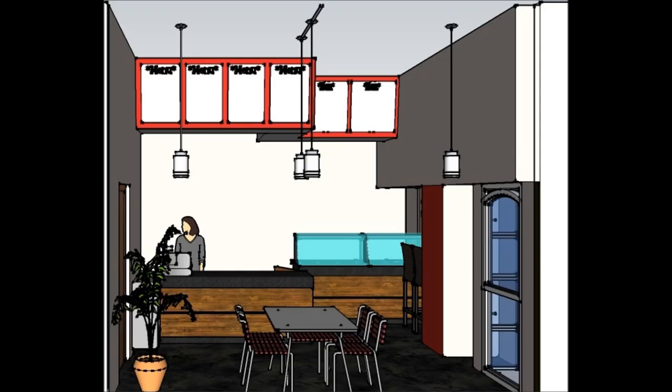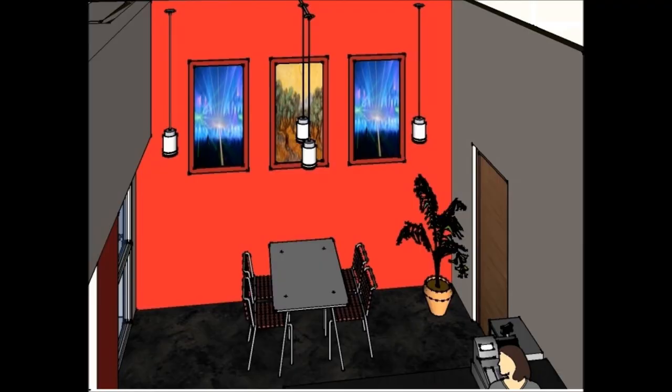What is the theme of the restaurant? The space is modern and open. We pick colors based on the restaurant logo. Part of the theme is the furniture, the lighting, and the finishes used.